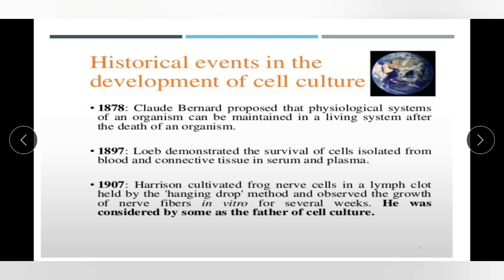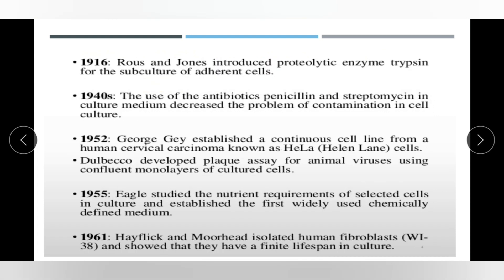In 1817, Claude Bernard proposed that the physiological system of an organism can be maintained in a living system after the death of an organism. In 1897, Loeb demonstrated the survival of cells isolated from blood and connective tissue in serum and plasma. In 1907, Harrison cultivated frog nerve cells in a lymph clot using the hanging drop method and observed nerve fiber growth in vitro for several weeks, considered by some as the father of cell culture. In 1916, Ross and Jones introduced the proteolytic enzyme trypsin for the subculture of adherent cells.